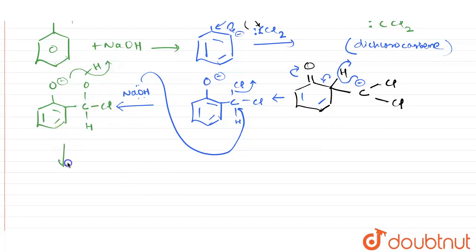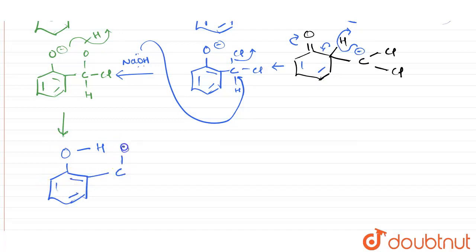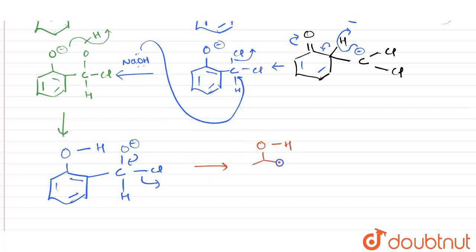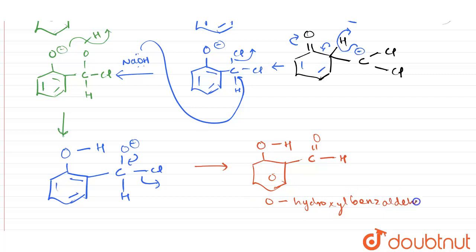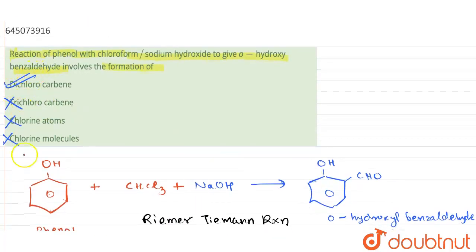The negative charge takes up the hydrogen, and the product formed has OH and OH groups. The remaining chlorine is then eliminated as the double bond shifts, and finally the structure obtained is OHC double bond OH — orthohydroxybenzaldehyde — the final product. Therefore, the correct answer is the formation of dichlorocarbene, so option A is correct.